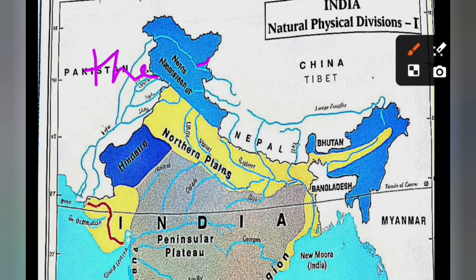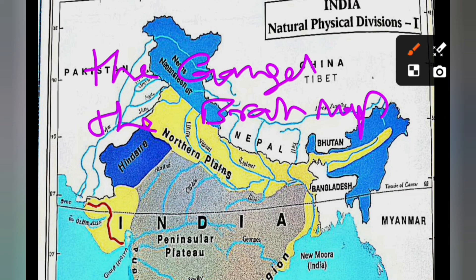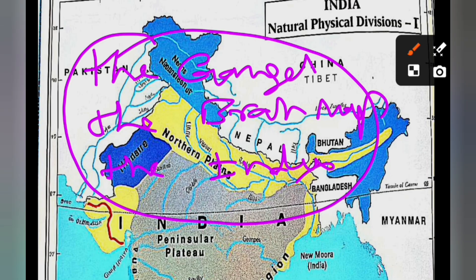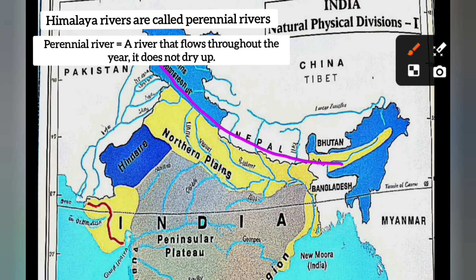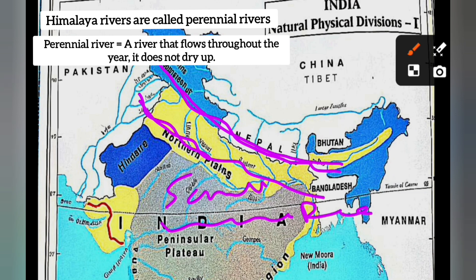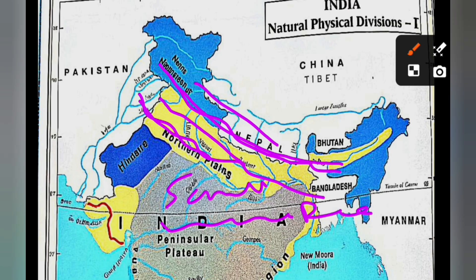The three Himalayan rivers are the Ganga, the Brahmaputra, and the Indus. These Himalayan rivers are perennial rivers — perennial means they flow throughout the year. They do not dry up whether it is summer, winter, or the rainy season.